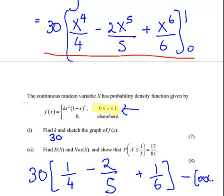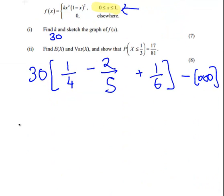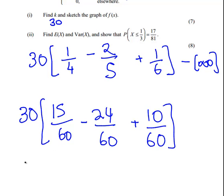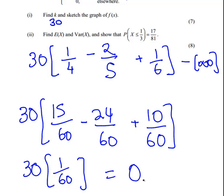That is 30 times 1 over 4 minus, I'm evaluating this at x equal to 1, at x equal to 0 it's just going to be 0, so 2 over 5 plus 1 over 6. What we have here is 15 over 60 minus 24 over 60 plus 10 over 60. That is 1 over 60. And that is actually equal to 0.5. So that's the expected value of x.